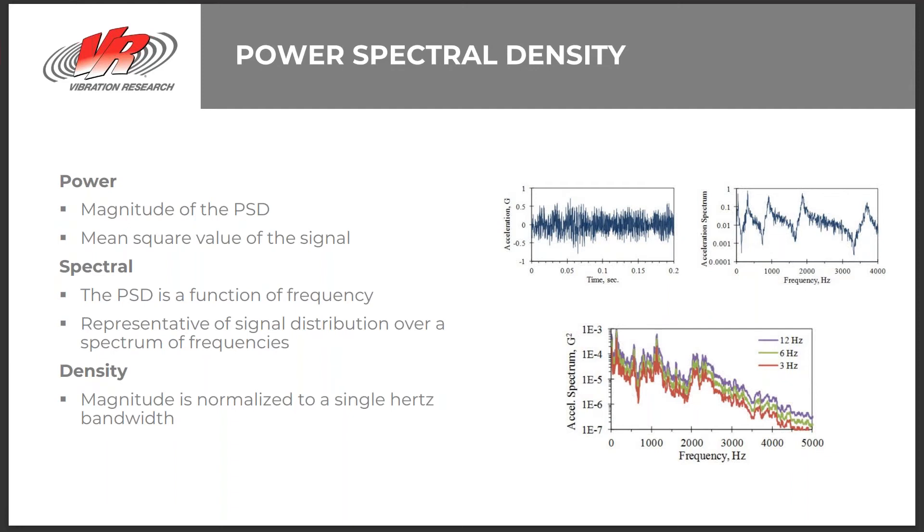Density: the magnitude of the PSD is normalized to a single hertz bandwidth. For example, for a signal with an acceleration measurement in unit G, the PSD units are G squared per hertz. That G squared is the power and the dividing by hertz is the density. We are normalizing this from a power spectrum into a PSD by dividing by the bandwidth of the test. The magnitude of a signal's frequency distribution depends on the number of frequency bands in the distribution. The PSD divides the squared magnitude by the frequency bandwidth to provide a consistent value independent of the bandwidth.